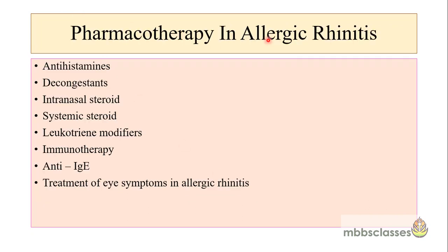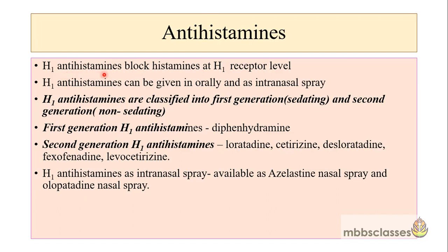Now let's see the pharmacotherapy in allergic rhinitis. The different subcategories of medicines prescribed include antihistamines, decongestants, intranasal steroids, systemic steroids, leukotriene modifiers, immunotherapy, IgE antibodies and treatment of eye symptoms. H1 antihistamines block histamine at the H1 receptor level and are the most commonly prescribed medicines for allergic rhinitis. They can be given orally and are also available as an intranasal spray. They are classified into first generation sedating antihistamines, like diphenhydramine, and second generation drugs like loratidine, cetirizine, desloratidine, fexofenadine and levocetirizine. The intranasal forms of H1 antihistamine available are azelastine nasal spray and olopatadine nasal spray.